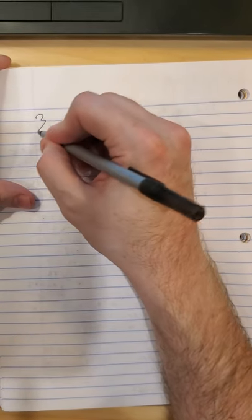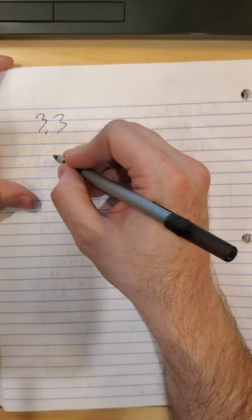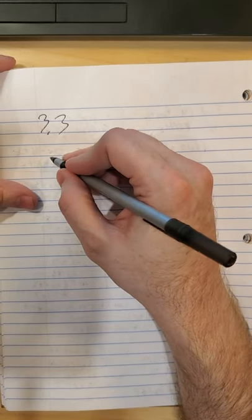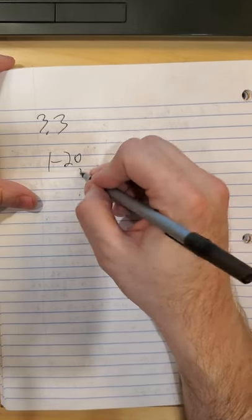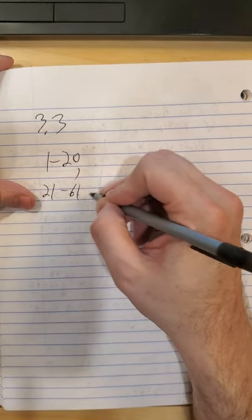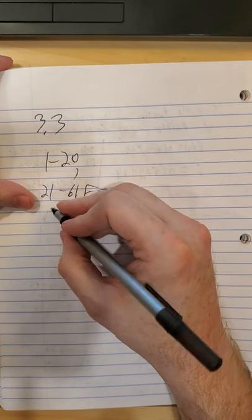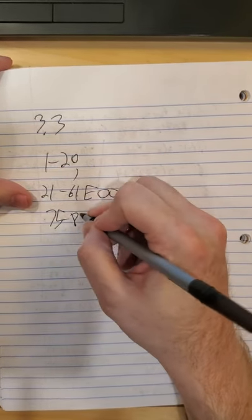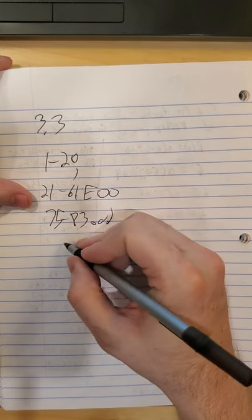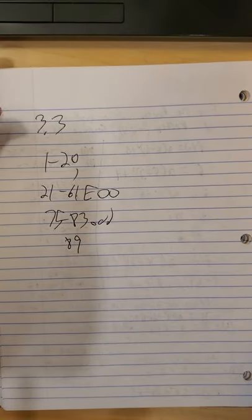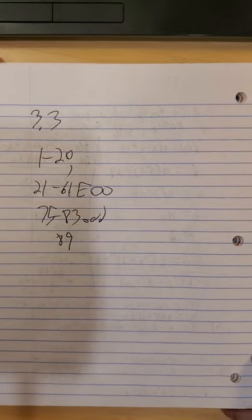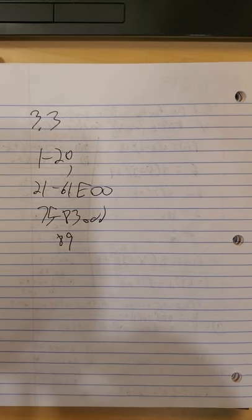So in section 3.3, I would recommend trying 1 through 20, 21 to 61 every other odd, 75 to 83 odd, and 89. If you have any questions, please get in touch. Otherwise, I'll see you next time.